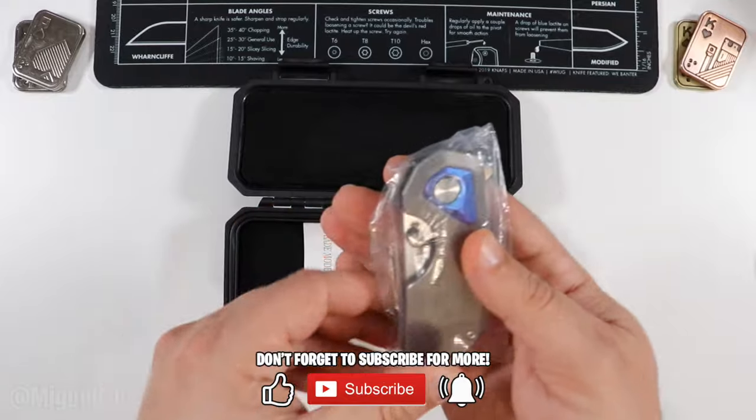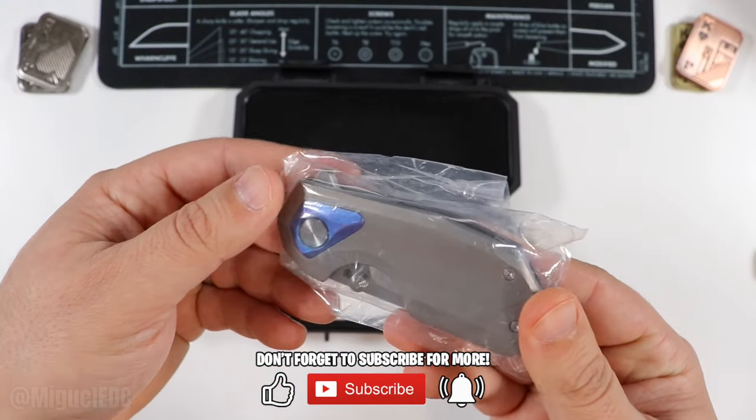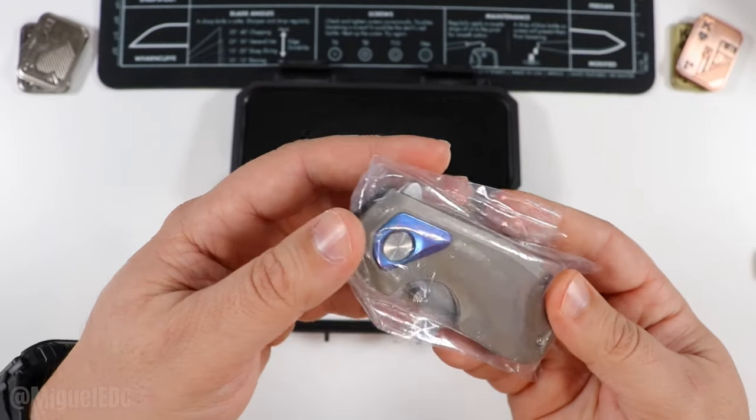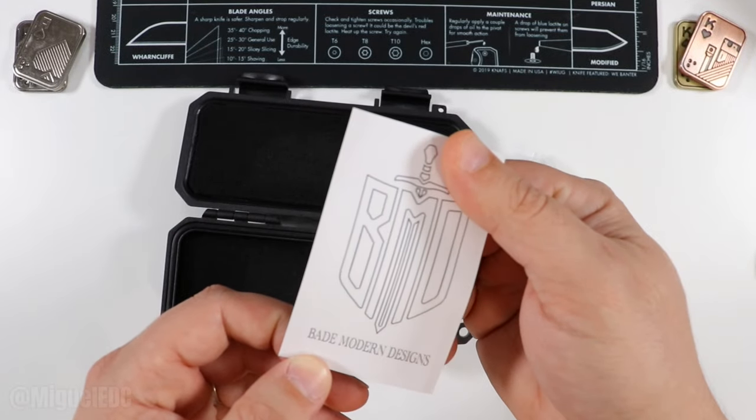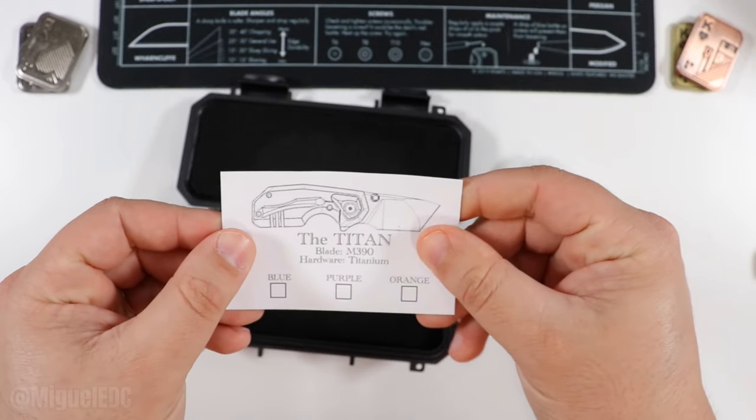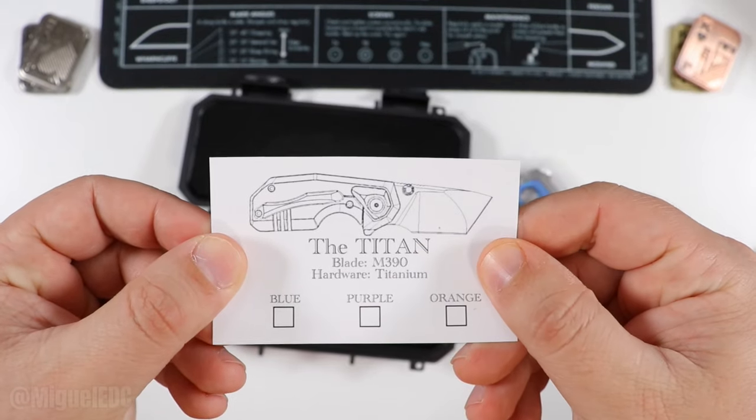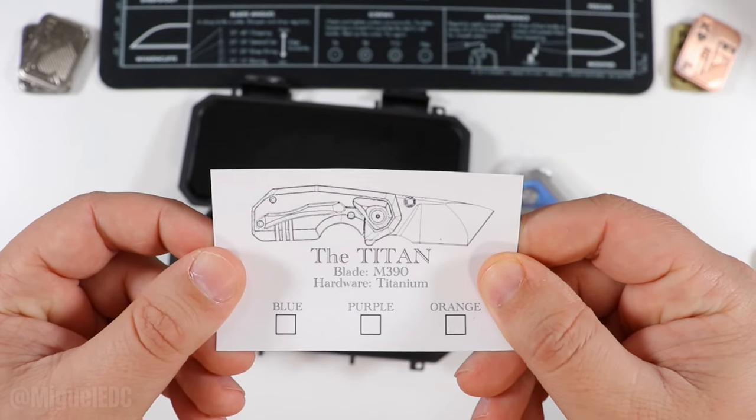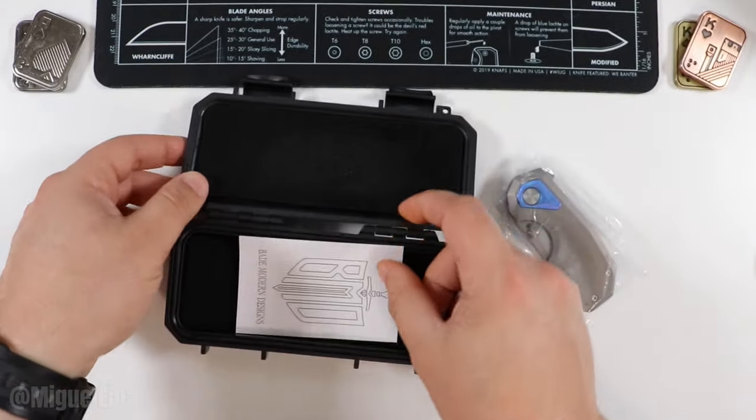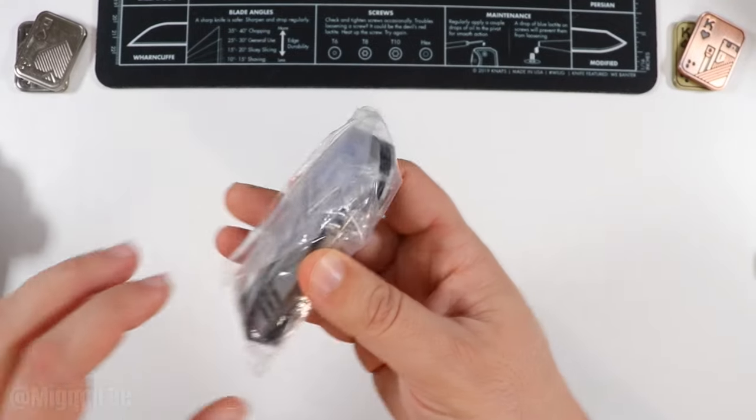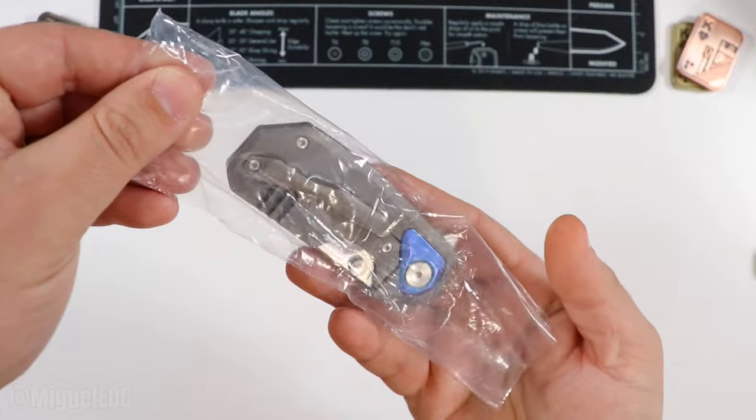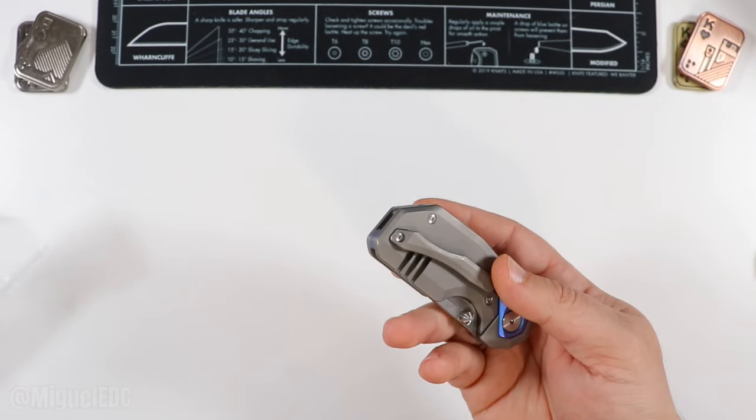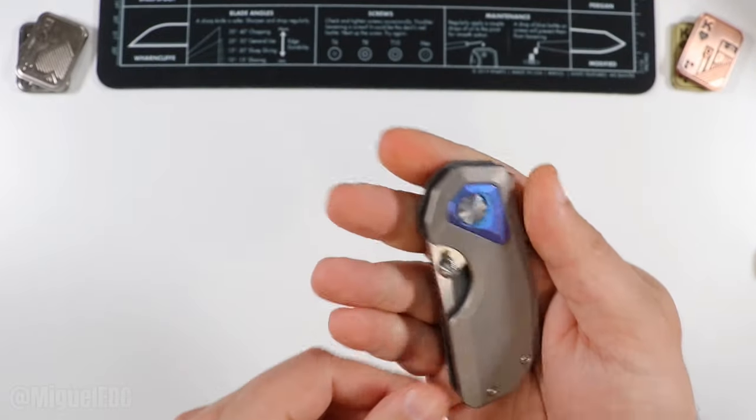Oh, I love this little guy. I remember seeing this one on Lefty's channel recently. So Blade Modern Designs. This one is the Titan, M390 on the blade hardware titanium. And this one is in blue. So let's take a closer look at this thing. Let's take it out of the plastic cover here. And holy smokes.